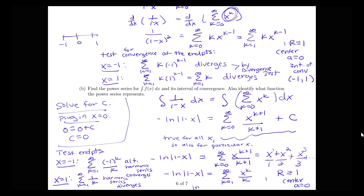So our interval of convergence includes negative 1, but not 1: x is in the interval negative 1 to 1, including negative 1 but not including 1. Same radius of convergence, but a different interval of convergence compared to when we took the integral of our original power series.